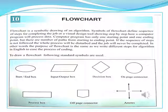Symbols of flowchart define the sequence of steps for completing a job, or visual design tools showing step by step how a computer program will process data. Flowchart is a way of graphical representation of a job. The algorithm is a logical sequence of instructions which we follow, and flowchart uses symbols to show them.